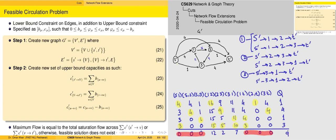The maximum flow is 9. Considering the cut across the graph, we have a score of 4+4+1=9, and since the maximum flow equals the total saturation flow from S to V or from V to T, we can say that the feasible solution in this case exists.